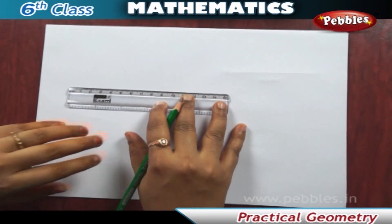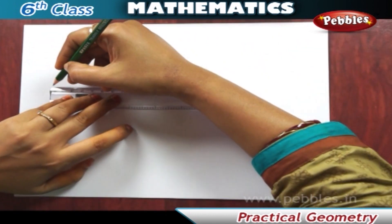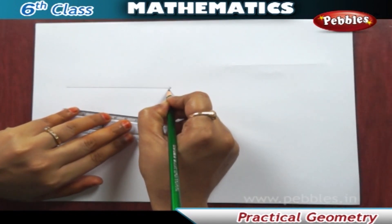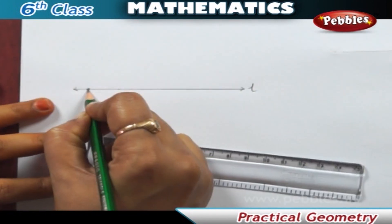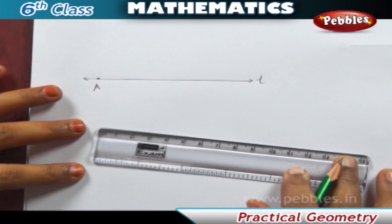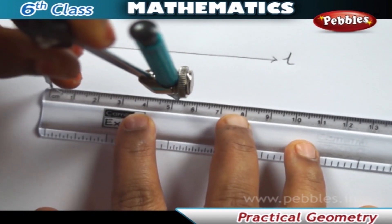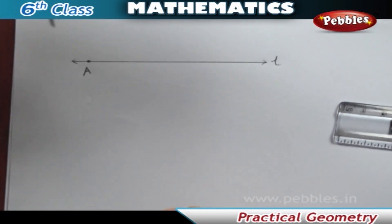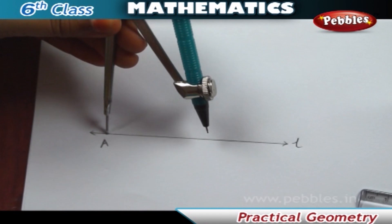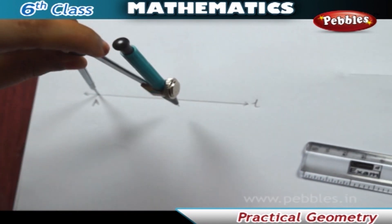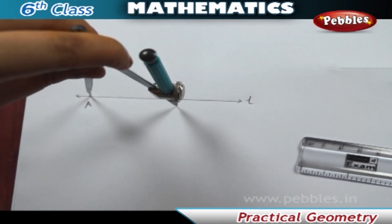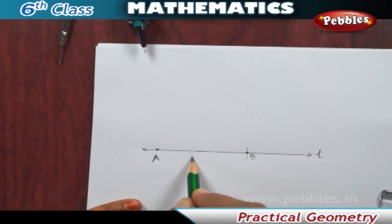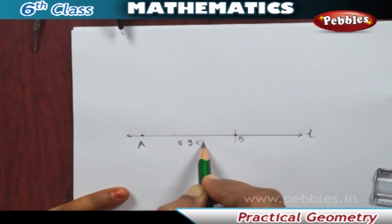Suppose we want to draw a line segment of length 5.3 centimeters. First, place the metal pointer of the compasses on the zero mark of the ruler. Open the compasses so that the pencil point touches the 5.3 centimeter mark on the ruler. Place the pointer at A on the line L and draw an arc to cut the line. Mark the point where the arc cuts the line as B. On the line L, we got the line segment AB of required length.